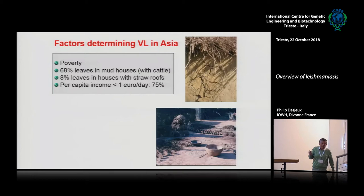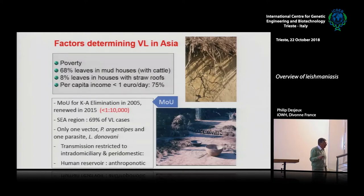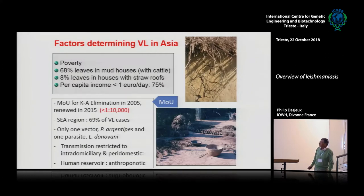In that case we saved the situation, but in many places people have no facilities. That's why the Kala-azar Elimination Programme started in 2005, reviewed in 2015, and now the target is 2020. The purpose is to reduce the incidence at district level to less than 1 per 10,000 inhabitants. At the start, SEARO had 69% of all cases around the world — that's why SEARO was targeted for this initiative.